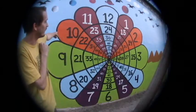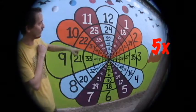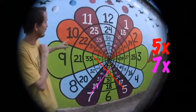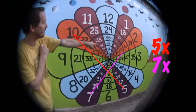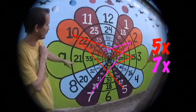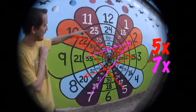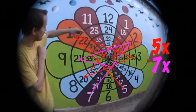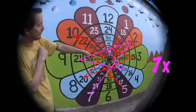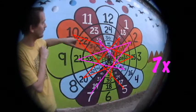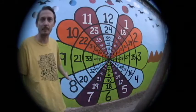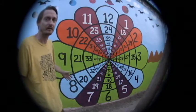So 5 goes up to 10 over here, 7 goes up to 14 over there, and then 5 goes back to 15 at 3, down to 20, up to 25. And 7 goes from 14 to 21, to 28, to 35. Every number has a pattern, basically.